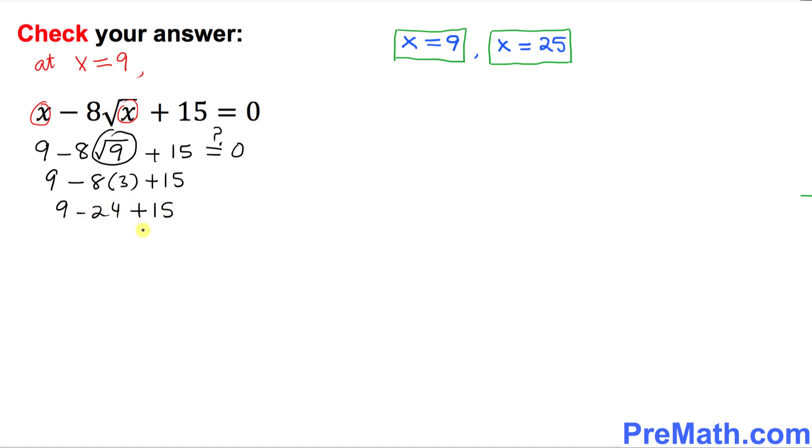So 9 minus 24 plus 15. So this, if you add and subtract, that's going to give you 0. And the right hand side, 0. My question is, is this statement true? Yes, of course, indeed, this is true. So thus, that means this x equal to 9 is our answer that has been checked. It's a good solution.